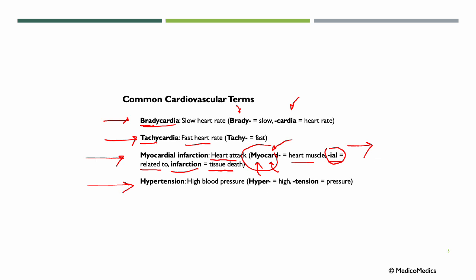Another term is HYPERTENSION, meaning high blood pressure. TENSION equals pressure, and HYPER means high. The opposite would use HYPO, so HYPOTENSION means low blood pressure.